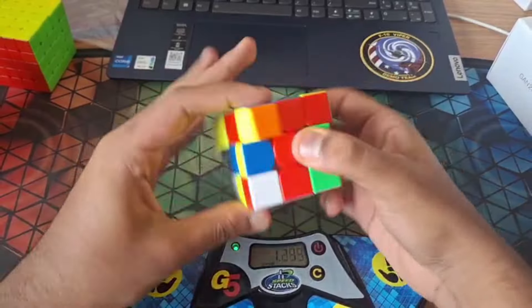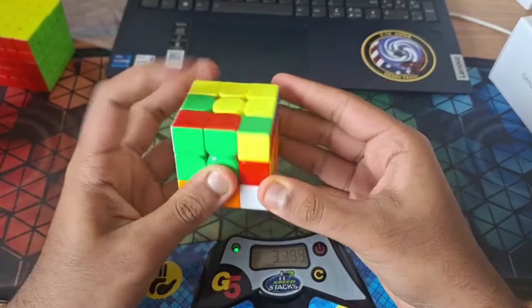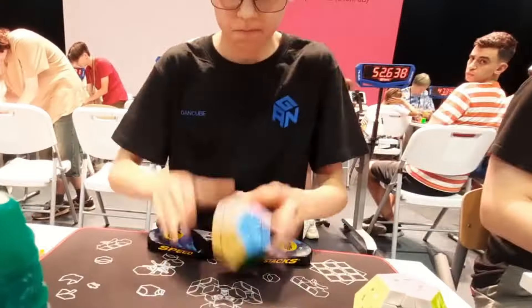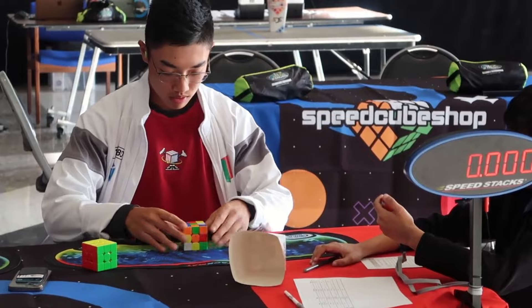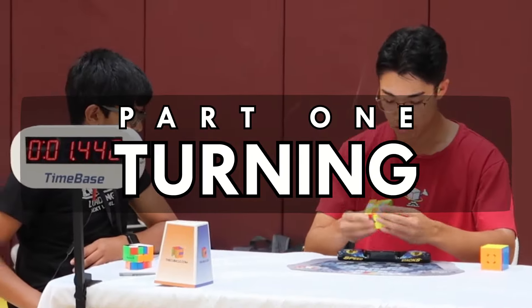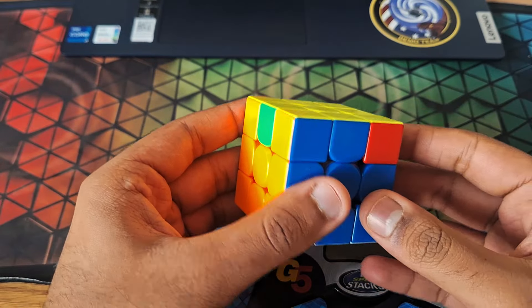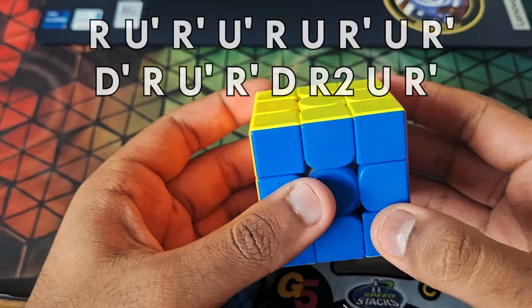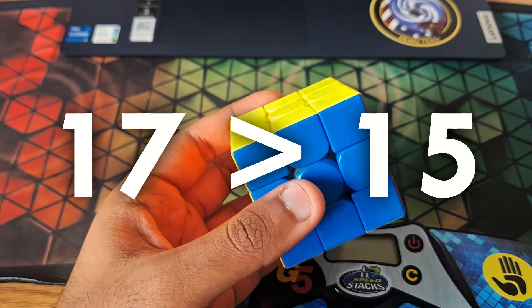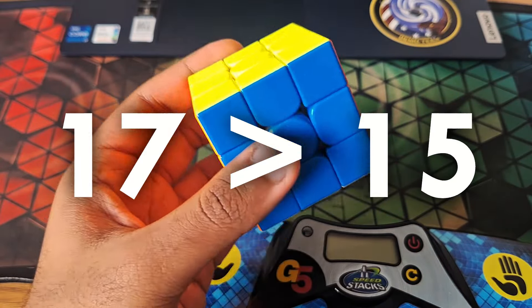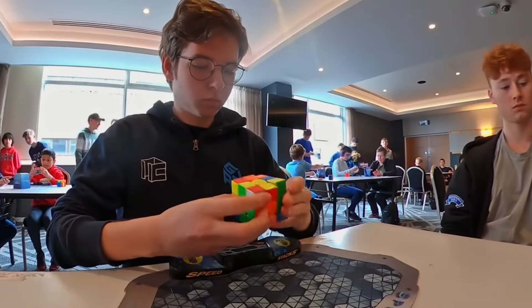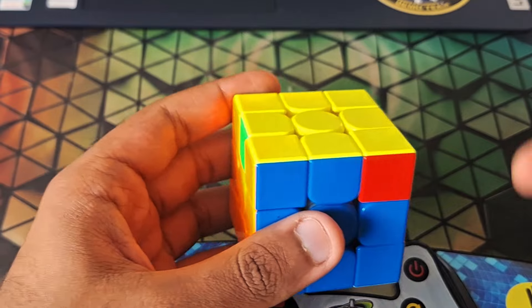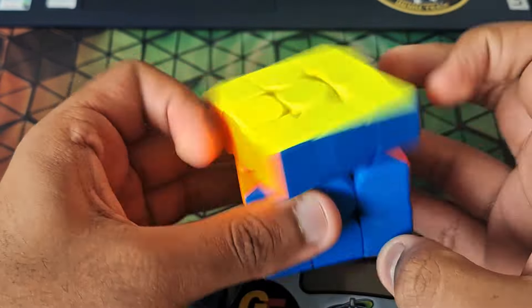Today we're going to be discussing the most common mistakes that sub-10 cubers make while turning, as well as analyzing the solving styles of top cubers. Let's start with a weird question: Why does Timon Klosinski use this R-perm? It is longer than the standard algorithm at 17 moves instead of 15. By all accounts, it should be slower. And yet, he chooses it. Let's keep this in mind, and maybe by the end of this video, you'll be able to answer this question.